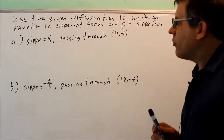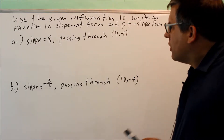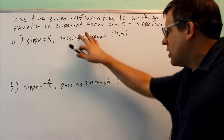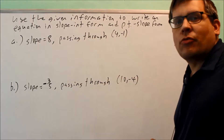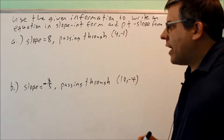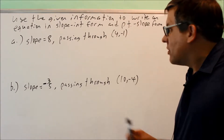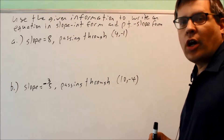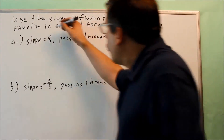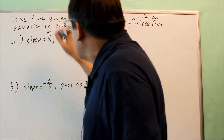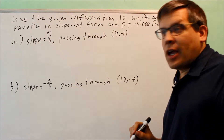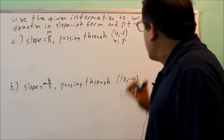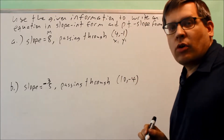We want to use the given information to find a formula for slope-intercept and also point-slope form. For part A, the slope is 8 and it passes through the point (4, -1). The information provided is the slope m, and then the point gives us x1 and y1.